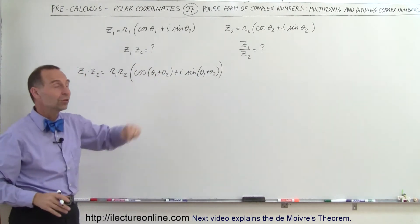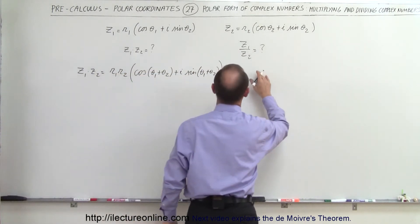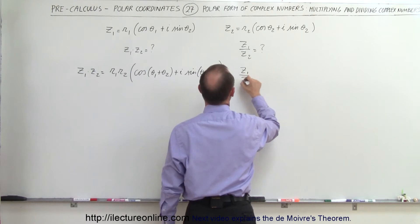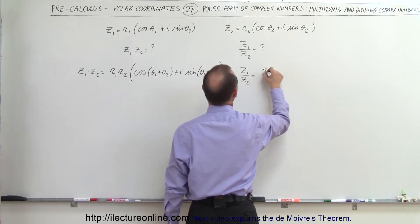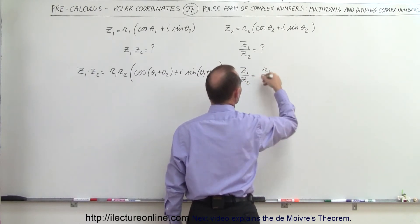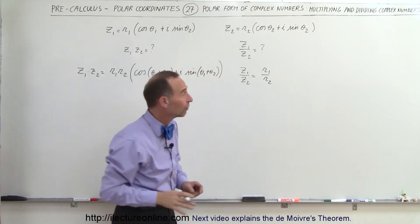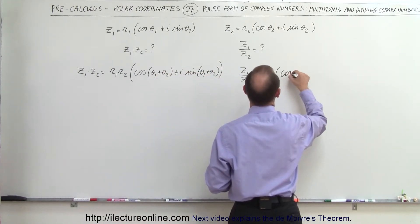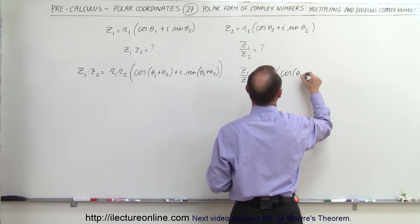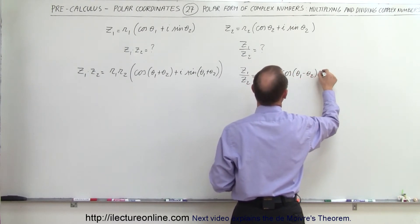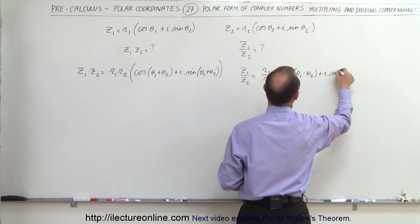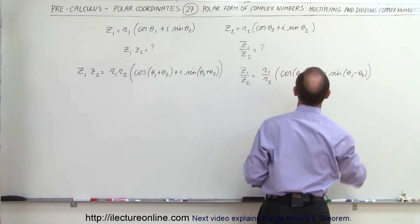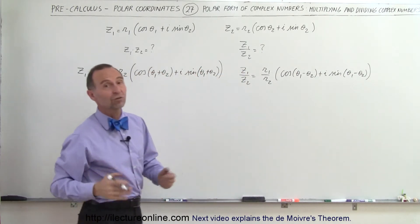Now, how do we divide two complex numbers in polar form? We can say that Z1 divided by Z2 is equal to R1 divided by R2 — simply the division of the two magnitudes — times the cosine of the difference of the two angles, theta 1 minus theta 2, plus i times the sine of the difference, theta 1 minus theta 2. So you can see, very straightforward.